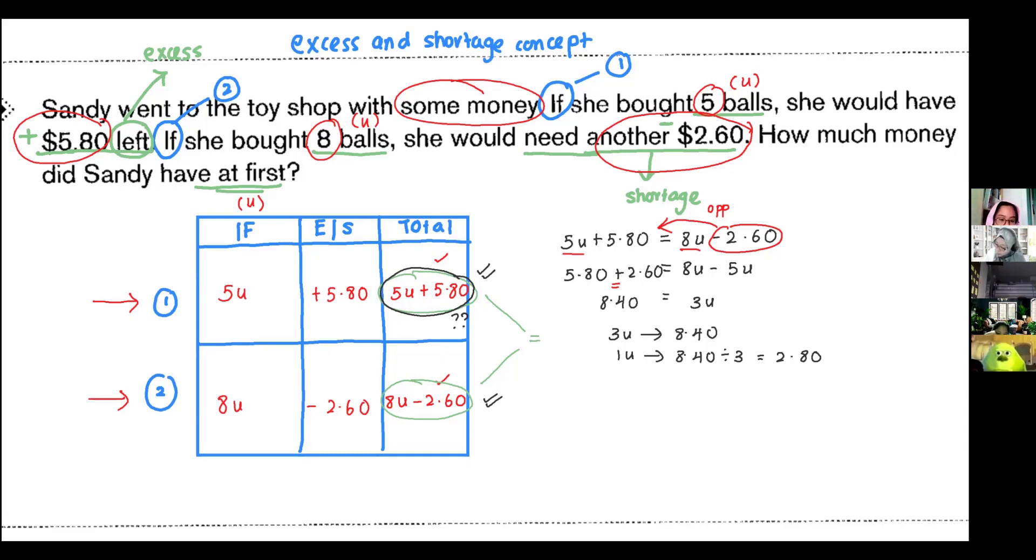So, since I know what is one unit. One unit is $2.80. Now, I want to know five unit. So, five unit plus $5.80 is equals to five unit means five times $2.80 plus $5.80 equals to $19.80. So, how much money did she bring at first? $19.80.